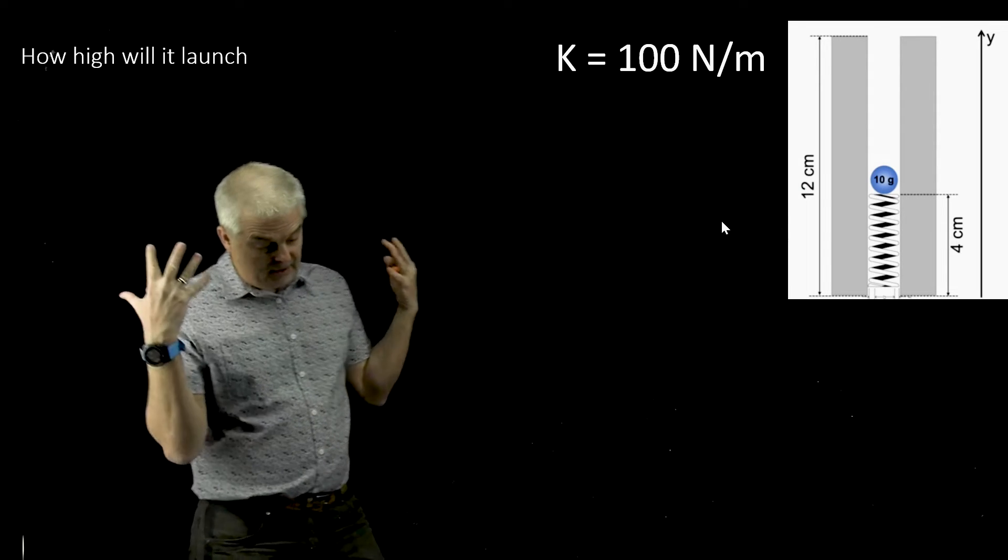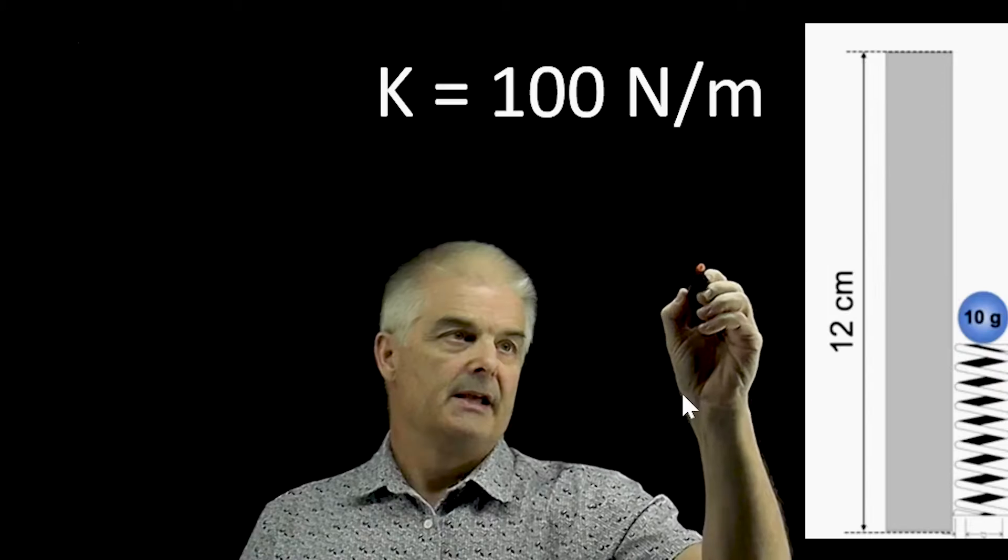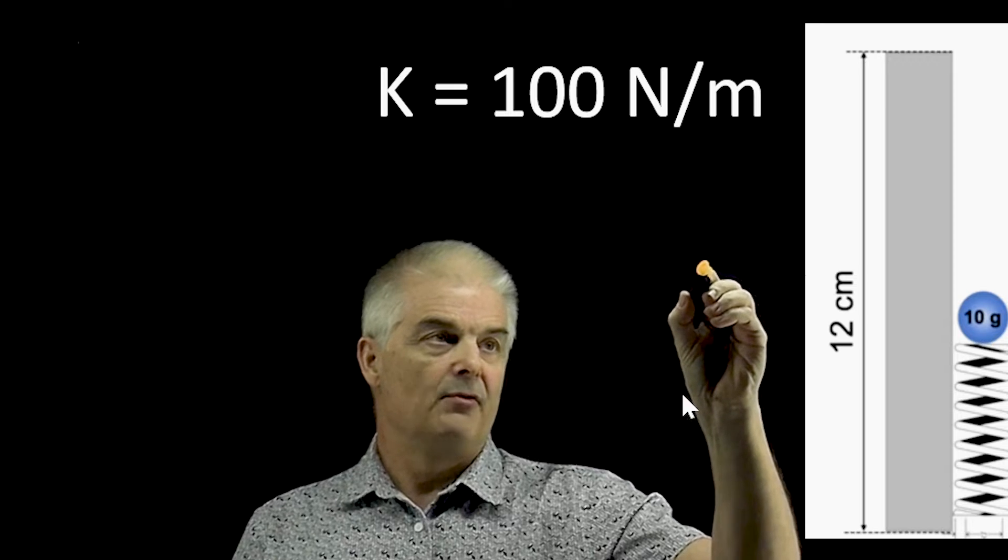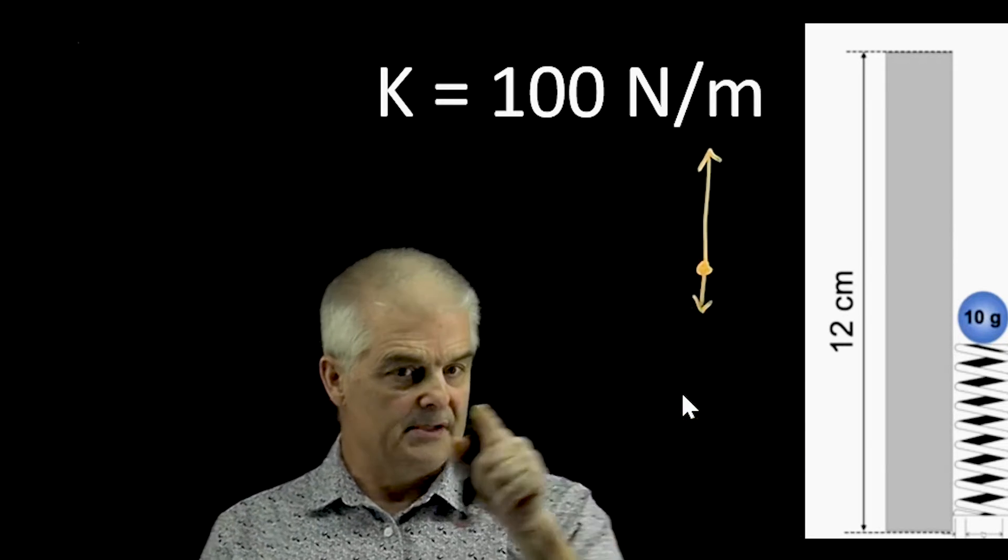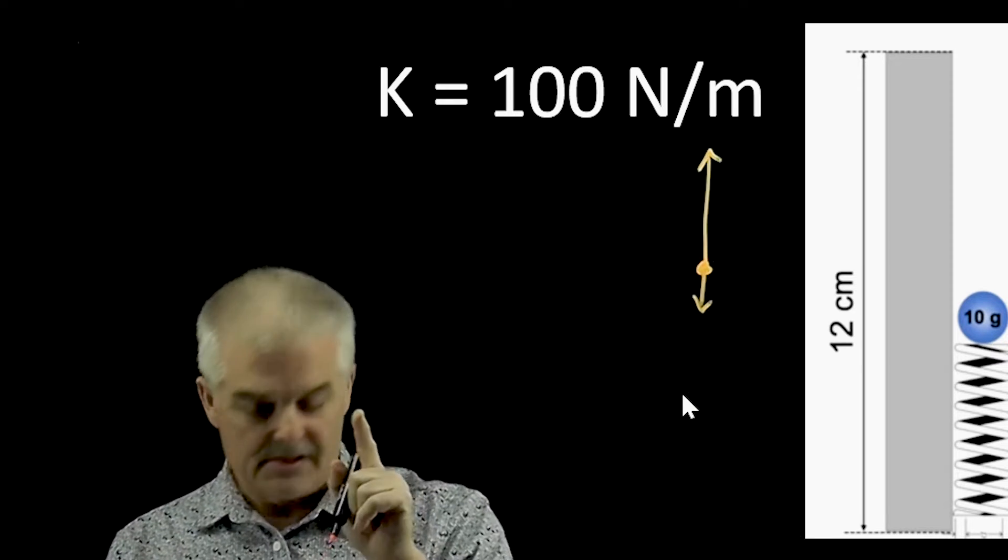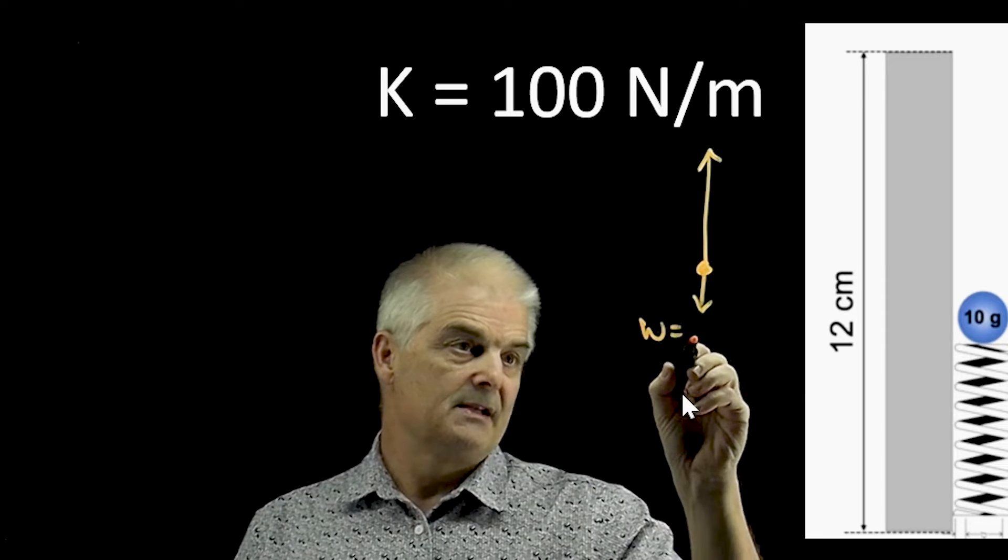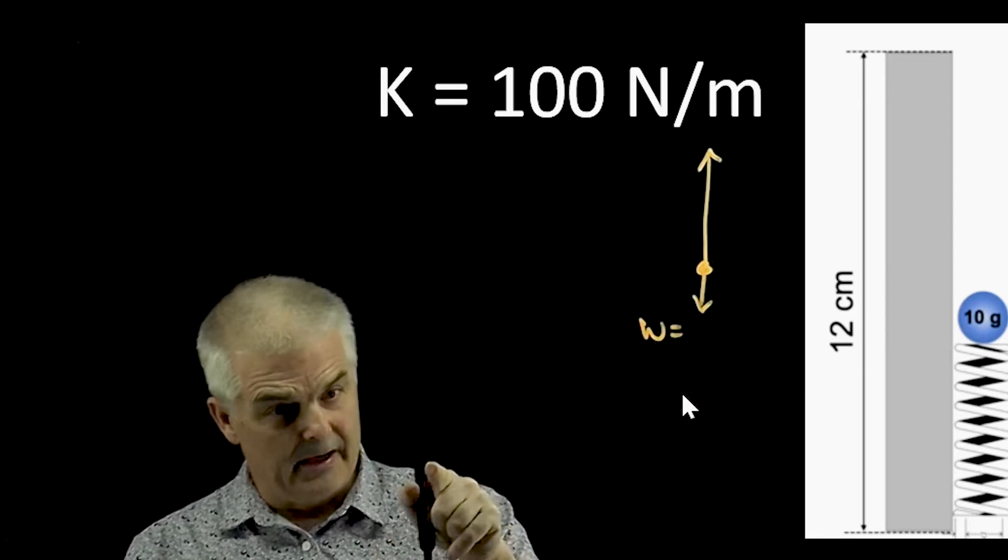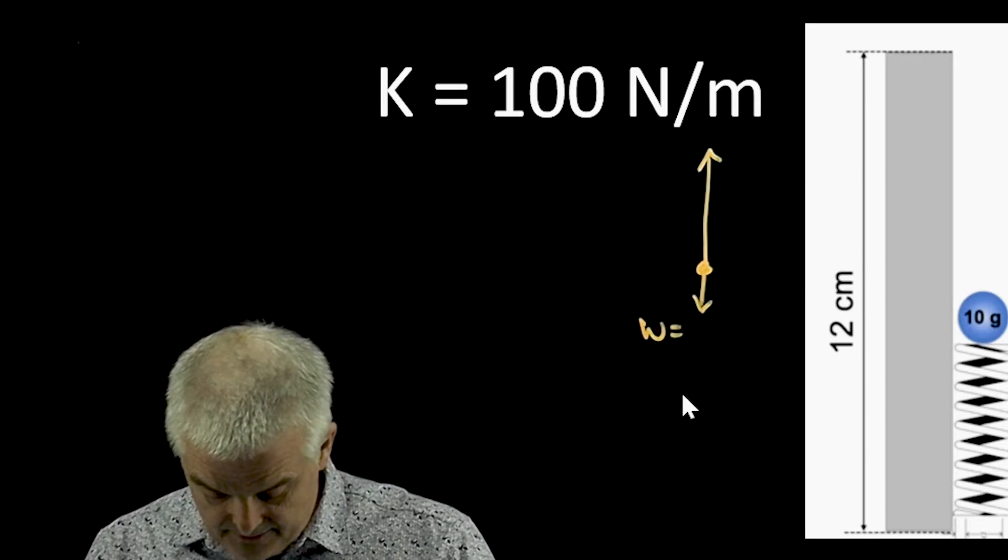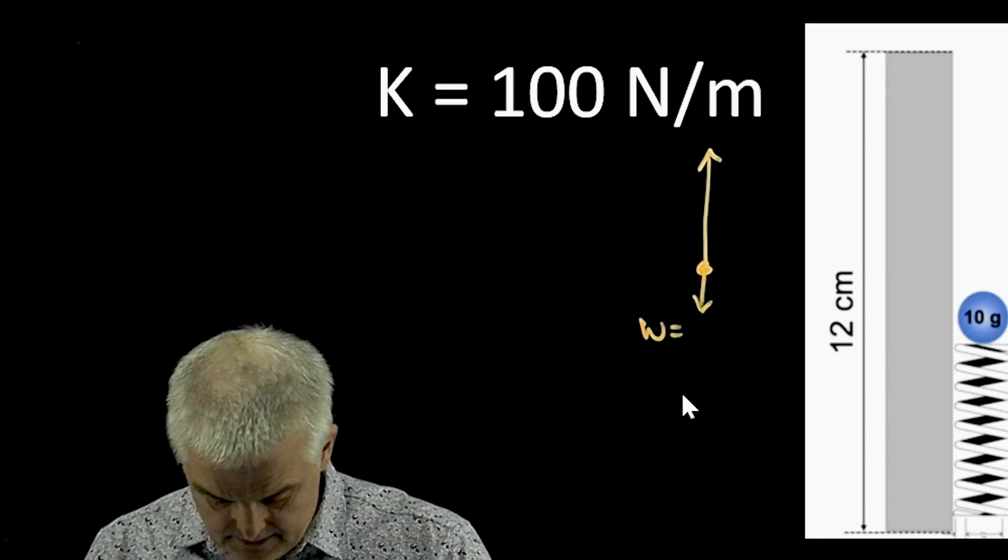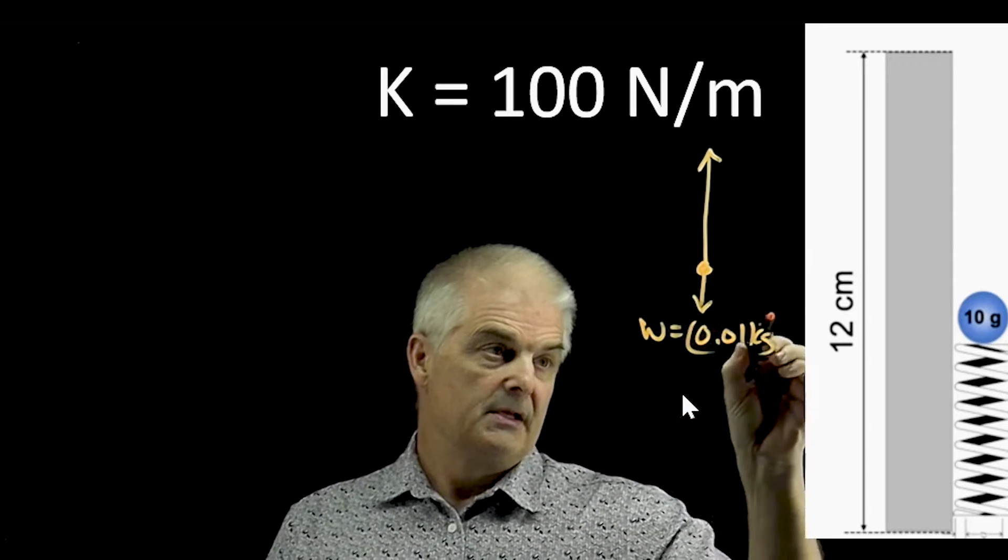So we're going to use our cool—let's actually think about a couple things. Something that's important to understand is that there is going to be a force upward, but there's also a force downward because the ball has a mass of 10 grams, and so that's its weight,